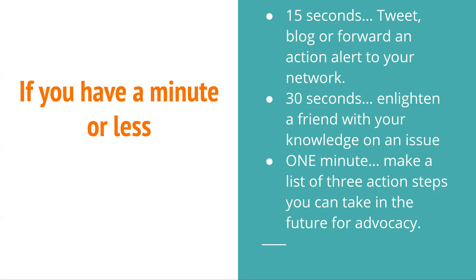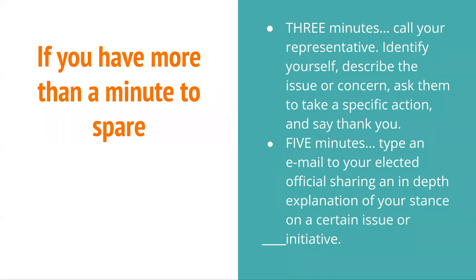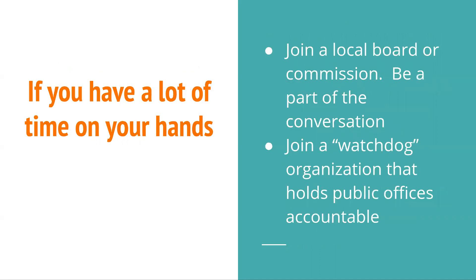If you have one minute, make a list of three action steps you can take for advocacy. If you have three minutes, call your representative — identify yourself, describe the issue, ask them to take a specific action, and say thank you. If you have five minutes, type an email to your elected official sharing an in-depth explanation of your stance on a certain issue. If you have more time, join a local board or commission, tune into House committee meetings and hearings, or join a watchdog organization that holds public offices accountable.